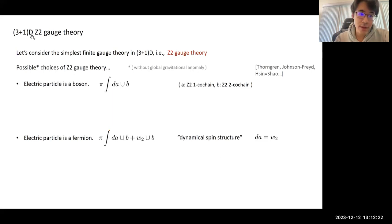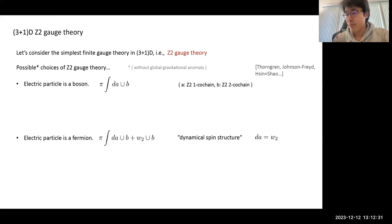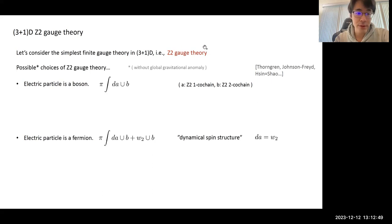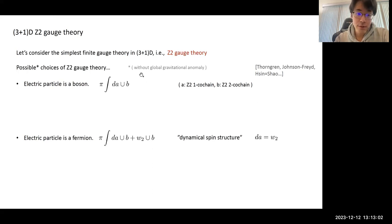I'm interested in the Z2 gauge theory — the simplest class of 3+1D TQFT — but the term 'Z2 gauge theory' can mean several things. I have to clarify the possible choices. Without considering cases with global gravitational anomaly, there are basically just two choices of Z2 gauge theory in 3+1 dimensions.